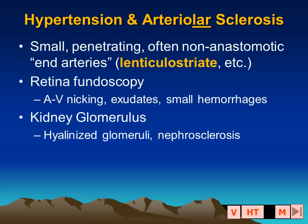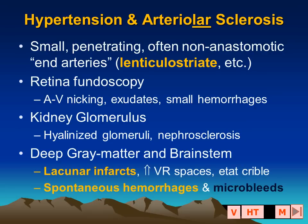Small vessels also supply the renal glomerulus and are associated with nephrosclerosis. In the brain, the lesions that occur in the deep gray matter, brain stem, and internal capsule include spontaneous small infarcts, enlargement of the Virchow-Robin spaces, and état criblé.